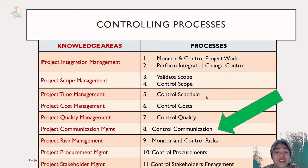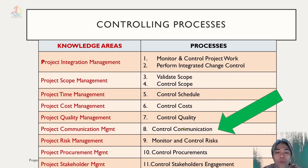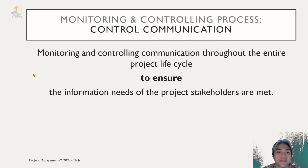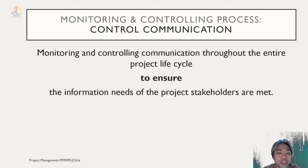In the controlling process, project communication management consists of one process called Control Communication. Control communication means monitoring and controlling communication throughout the entire project lifecycle to ensure that the information needs of the project stakeholders are met.